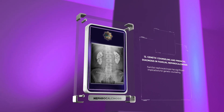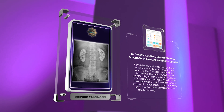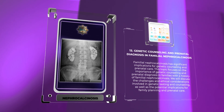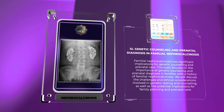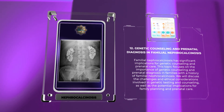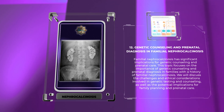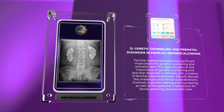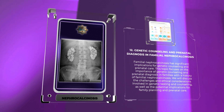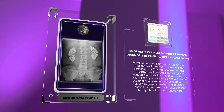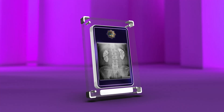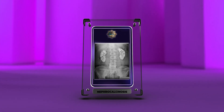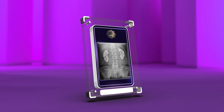Familial nephrocalcinosis has significant implications for genetic counseling and prenatal care. This topic focuses on the importance of genetic counseling and prenatal diagnosis in families with a history of familial nephrocalcinosis. We will discuss the challenges and ethical considerations involved in genetic testing, as well as the potential implications for family planning and prenatal care.